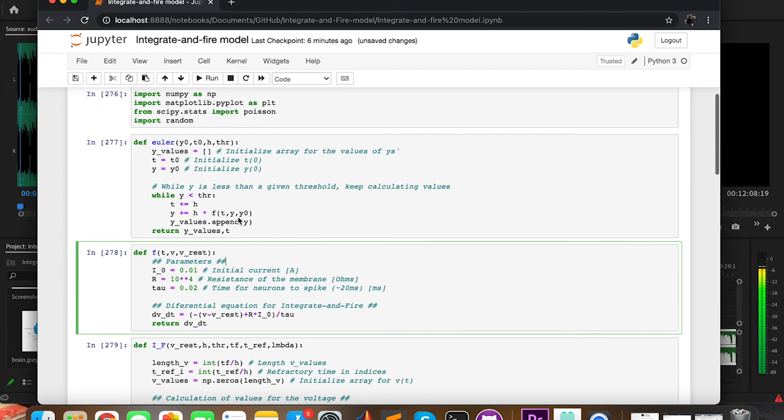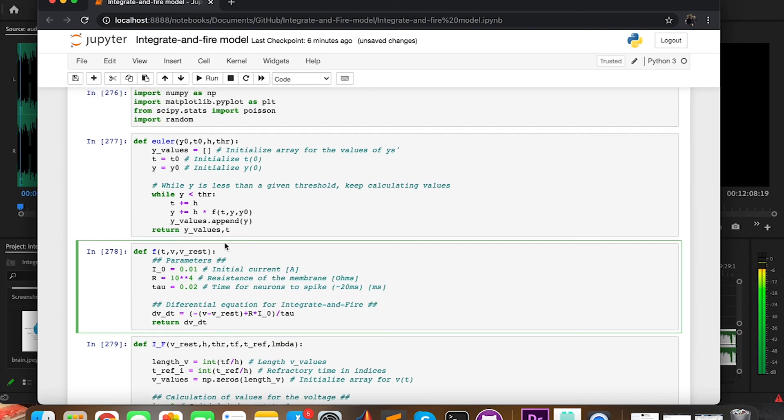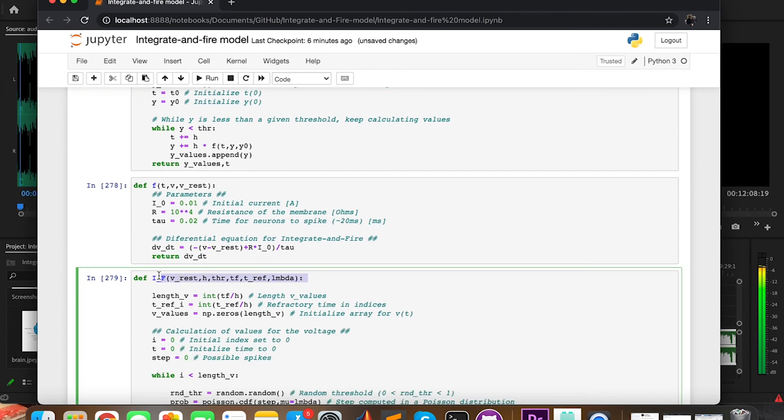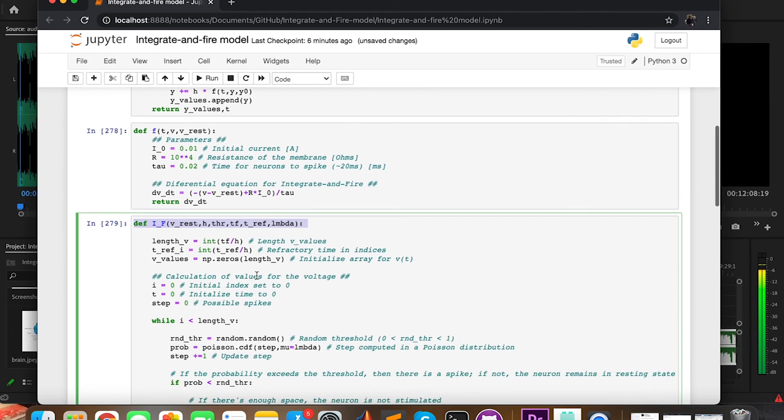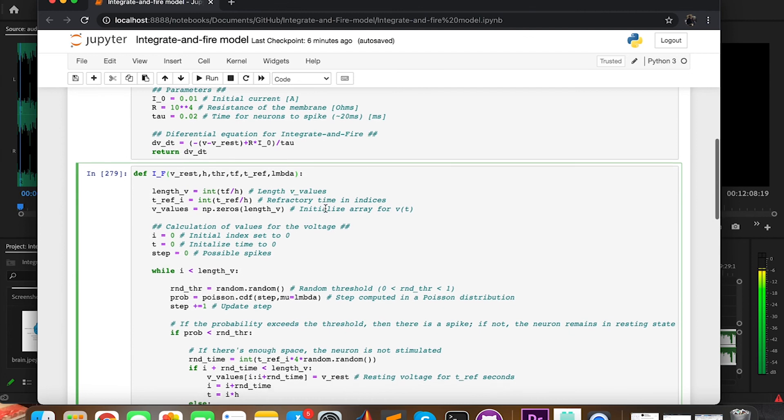So now that we have these two functions defined, we are ready to define the function that will do the whole simulation. It will be called if, and it will have as arguments v_rest, the voltage of the neuron at rest, h, the time step, the threshold, tf, that is the duration in time of the simulation, tref, that is the refractory time which we said was going to be 20 milliseconds, and lambda for the Poisson distribution.